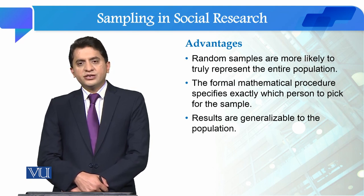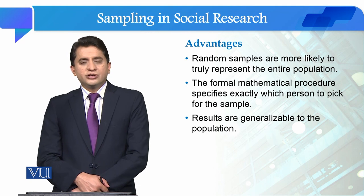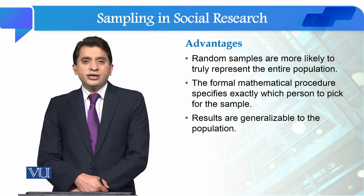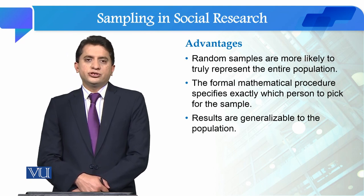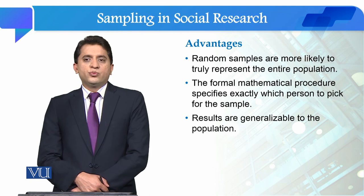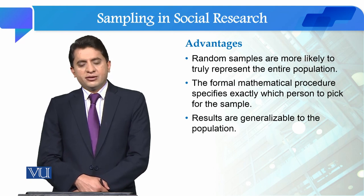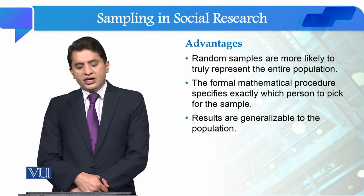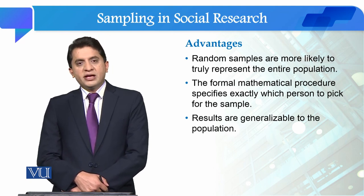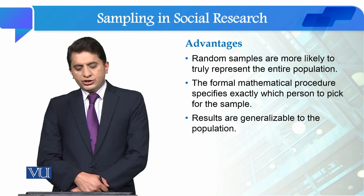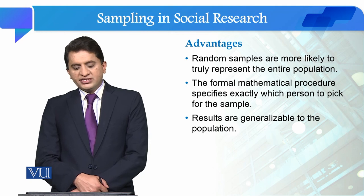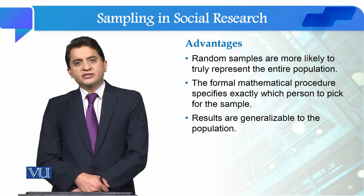The advantages of random sampling are that random samples are more likely to truly represent the entire population. Random samples accurately represent the whole population — they are proper representatives of the population.